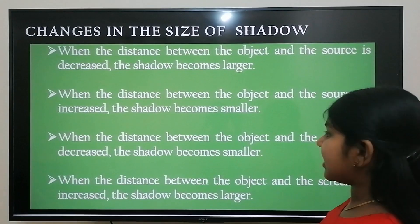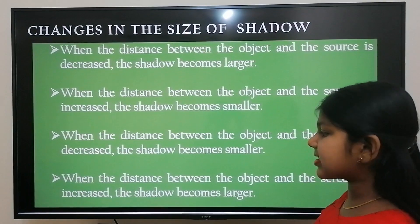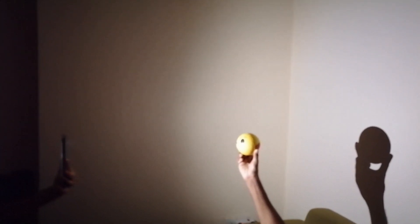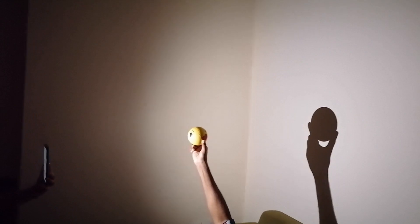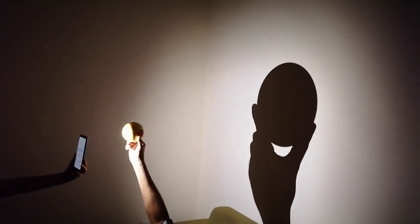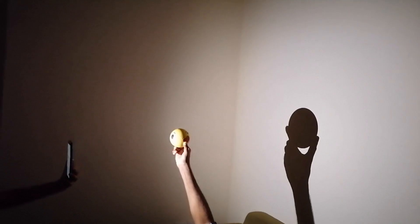Case 3: when the distance between the object and the screen is decreased, the shadow becomes smaller. Case 4: when the distance between the object and the screen is increased, the shadow becomes larger. In the activity, the flashlight from the mobile acts as the source and the wall acts as the screen, demonstrating all four cases: decreasing object-to-screen distance makes the shadow smaller; increasing it makes the shadow larger; decreasing object-to-source distance makes the shadow larger; and increasing it makes the shadow smaller.